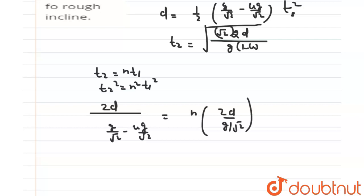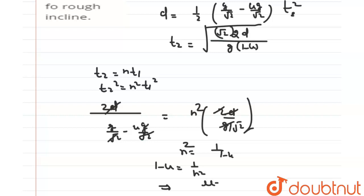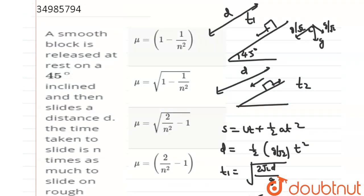Canceling d, 2, √2, and g from both sides gives: 1/(1−μ) = n², so 1−μ = 1/n², and therefore μ = 1 − 1/n². So the coefficient of friction on the rough incline is 1 − 1/n².